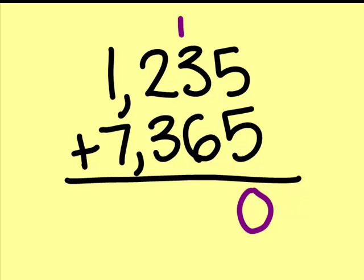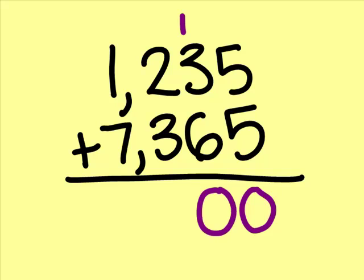3 plus 6 is 9, plus the carried 1 is 10, so we put another zero on the bottom and carry the 1 to the next row. 2 plus 3 is 5, plus 1 is 6. And 1 plus 7 is 8.